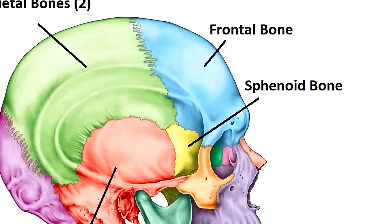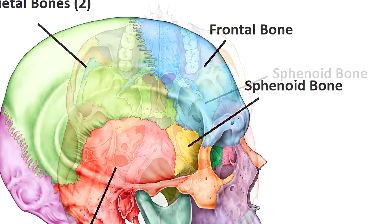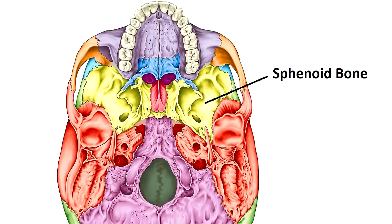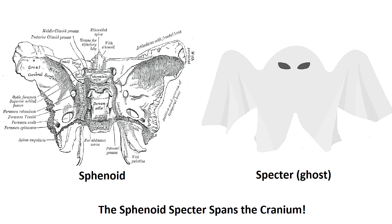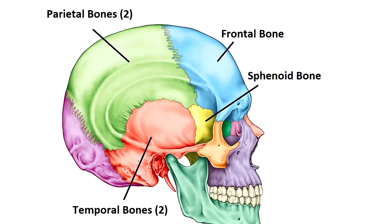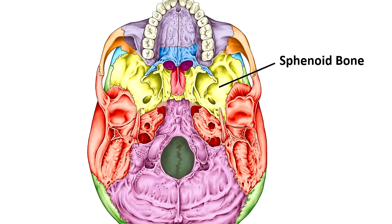The sphenoid bone is a butterfly-shaped bone that articulates with all the cranial bones and spans the entire width of the cranium, which you can see when you look at the inferior view of the skull. The sphenoid also looks like a specter — another word for ghost — so the sphenoid is the specter that spans the cranium. Don't be fooled by the lateral skull view, because from the side it appears to be a pair of bones, but when you flip it over you'll see it's just one large bone spanning the cranium.